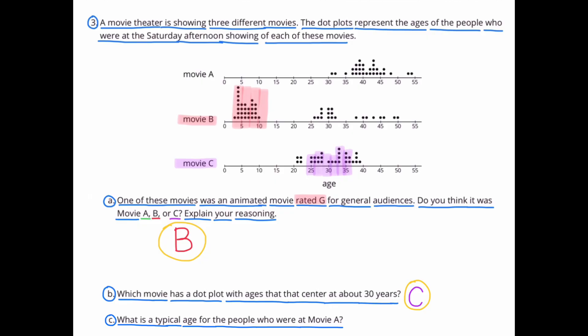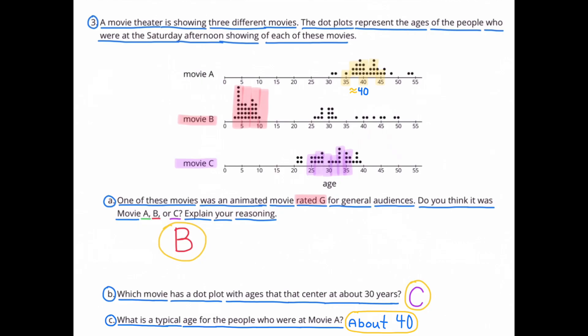C. What is a typical age for the people who were at movie A? The typical age for people who were at movie A is about 40 years old. The majority of the people at movie A were between the ages of 35 and 45, which would be 40 years old.